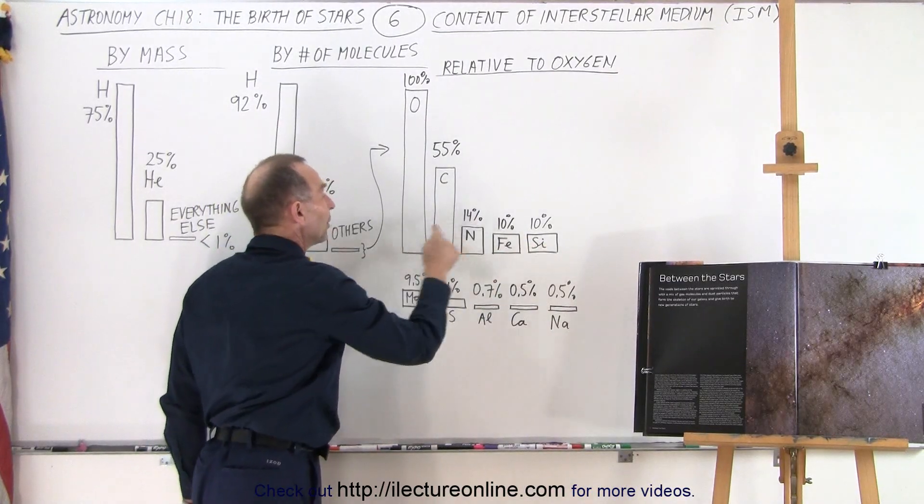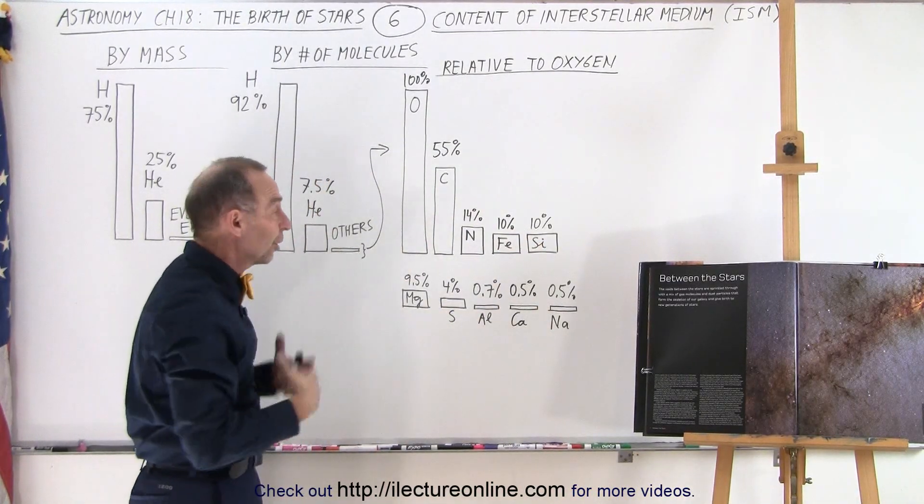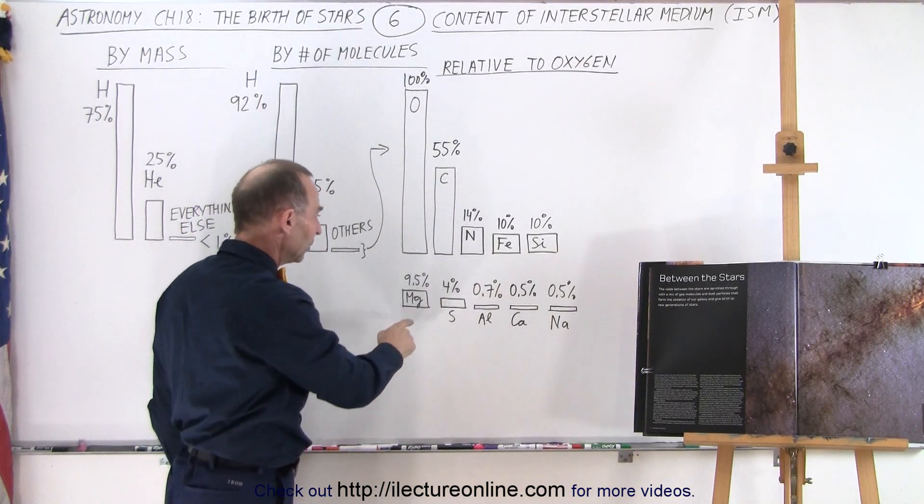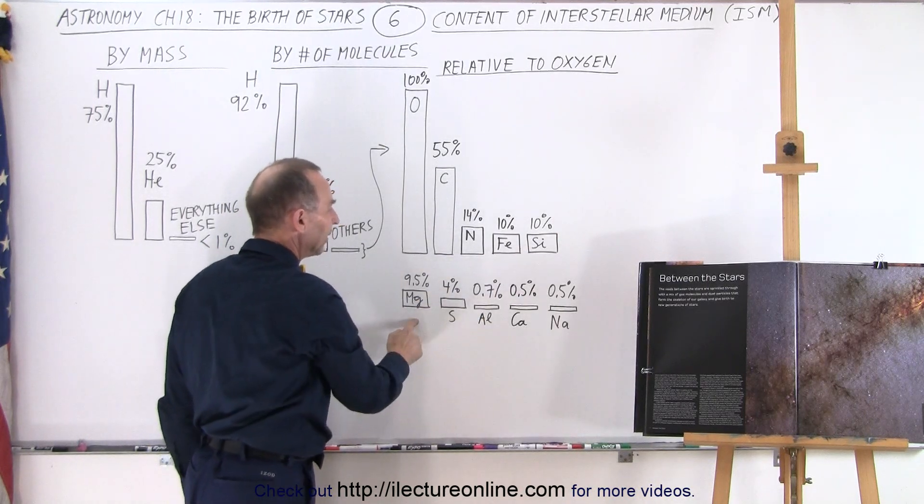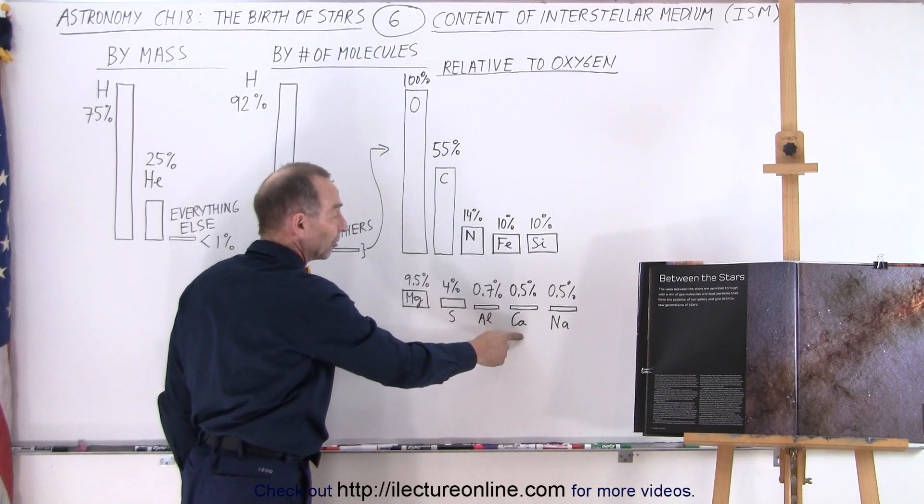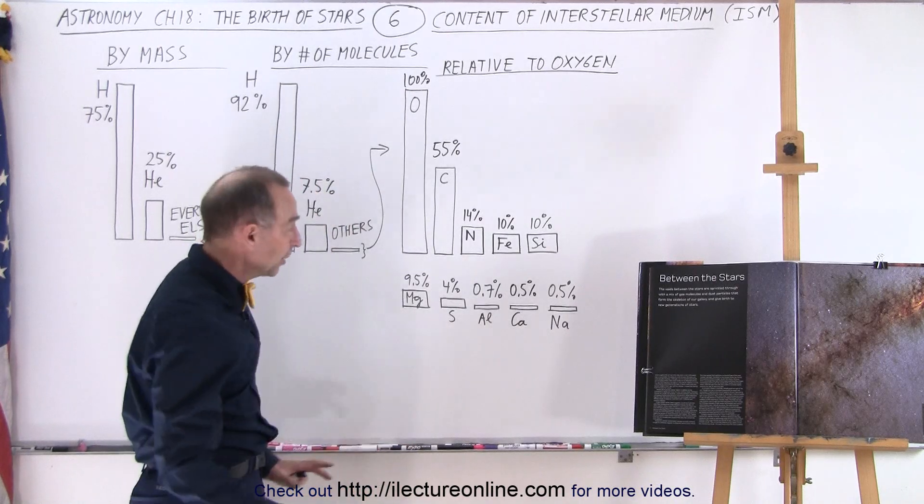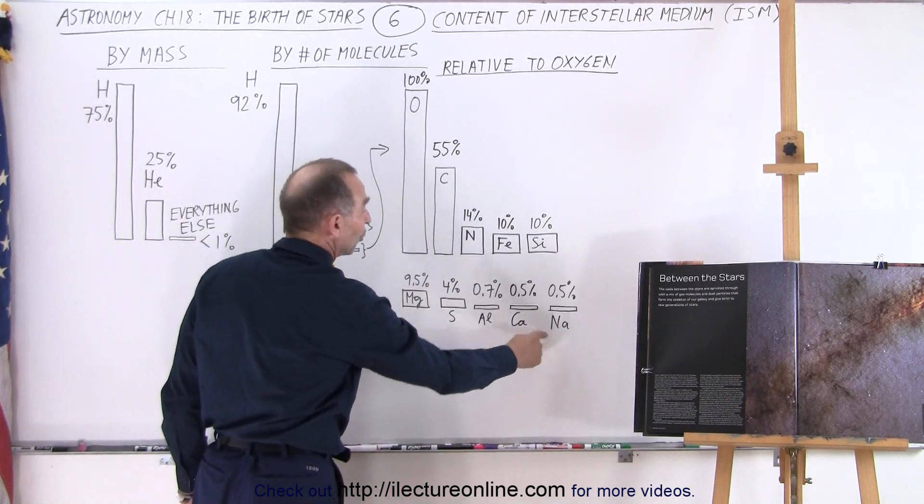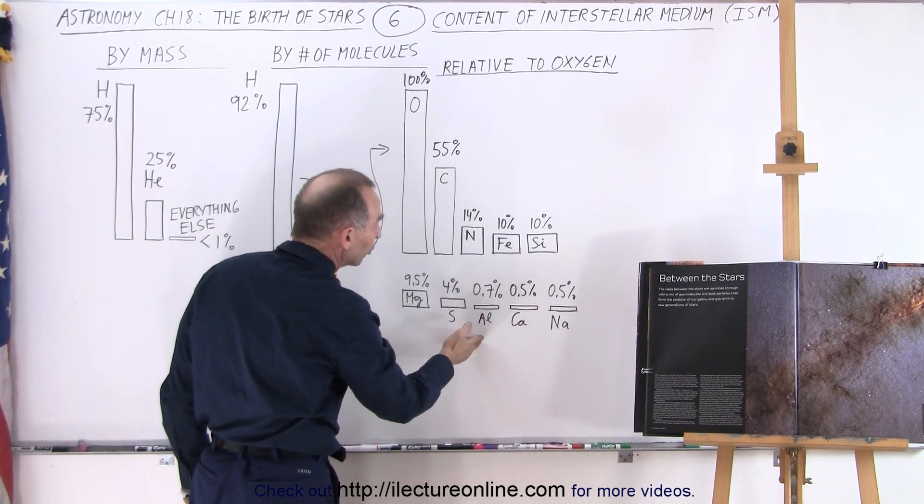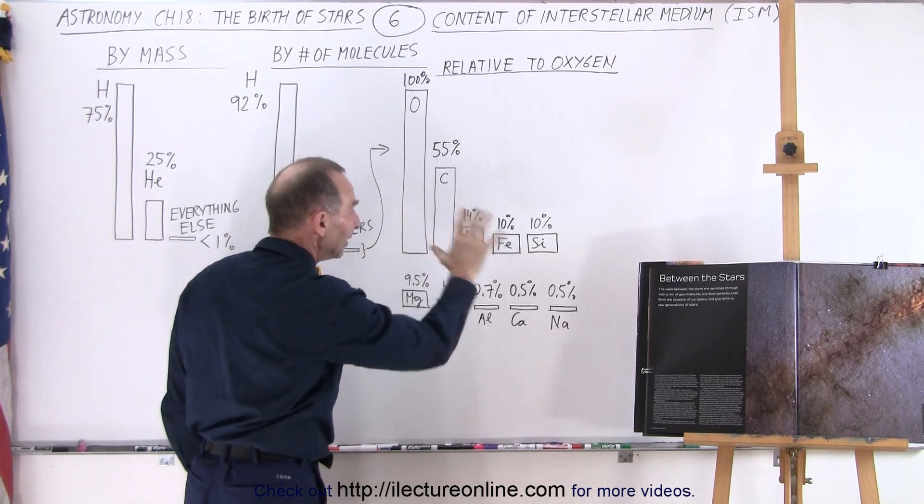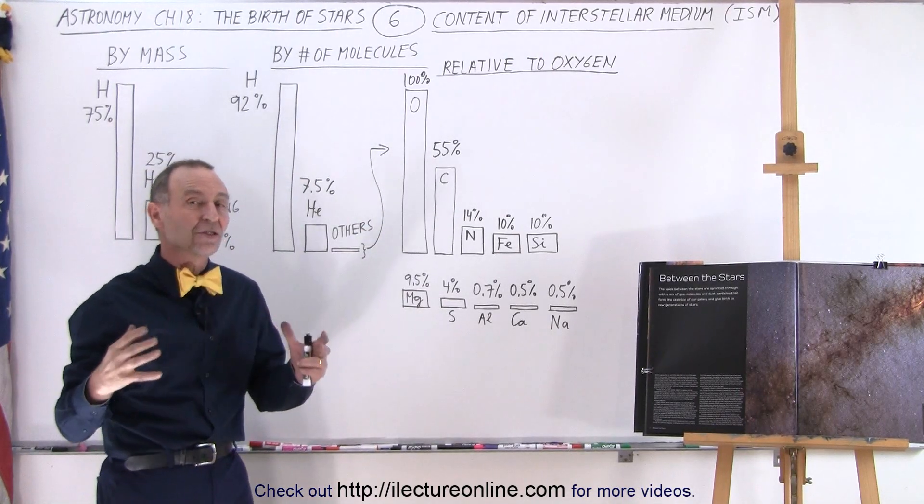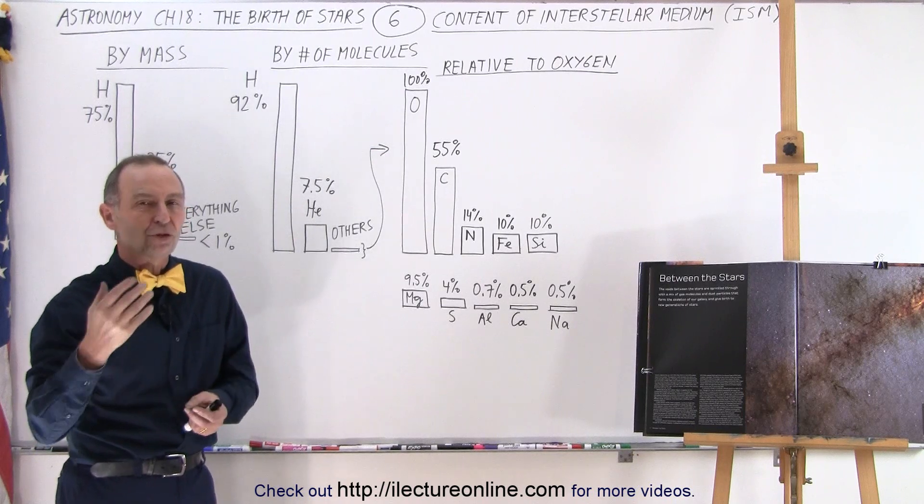These had to be abundant elements when our solar system was formed. Otherwise, the earth could not have a crust and could not have rocks. The next most abundant element is magnesium, just slightly less than silicon. Then we have sulfur. Then we have aluminum. Surprisingly, aluminum is also fairly abundant. Then we have calcium. Then we have sodium. Notice, when we talk about calcium and sodium, one molecule for every 200 molecules of oxygen. For aluminum, it's about one molecule for every 150 molecules of oxygen. But at least it gives you a good idea about the relative abundance of the various elements that make up the interstellar space and by and large, the nebulas from which stars are born.